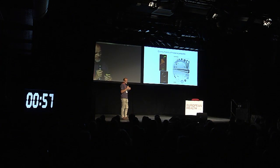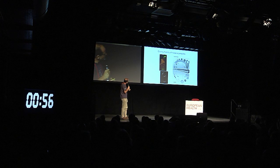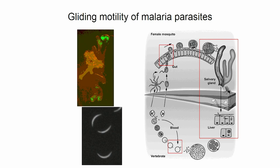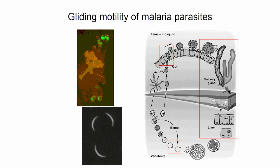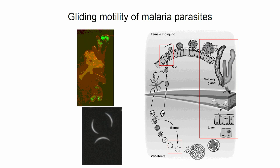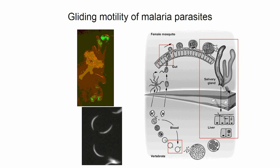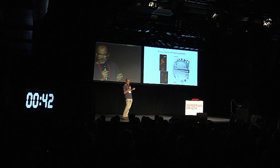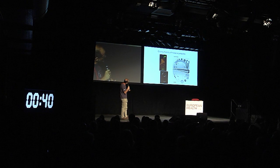When you put them in the right type of medium and on a flat surface, they move in circles, which is very convenient for a microscopist to analyze them. But they move at a remarkable speed of 1 to 3 micrometers per second, which is really one of the fastest cells there are in biology.